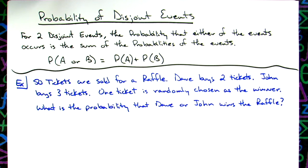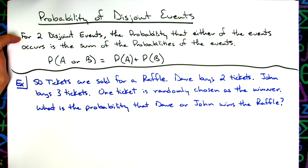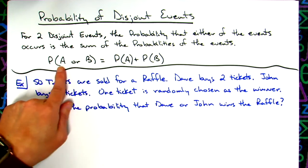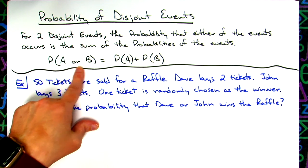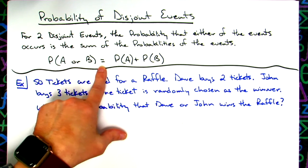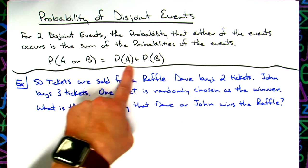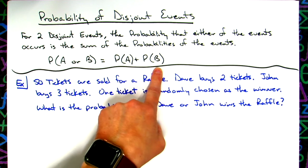In this video, we're going to take a look at one example of probability of disjoint events. For two disjoint events, the probability that either of the events occurs is going to be the sum of the probabilities of the events. This is a pretty common formula: the probability of A or B is going to be equal to the probability of the first event plus the probability of the second event.